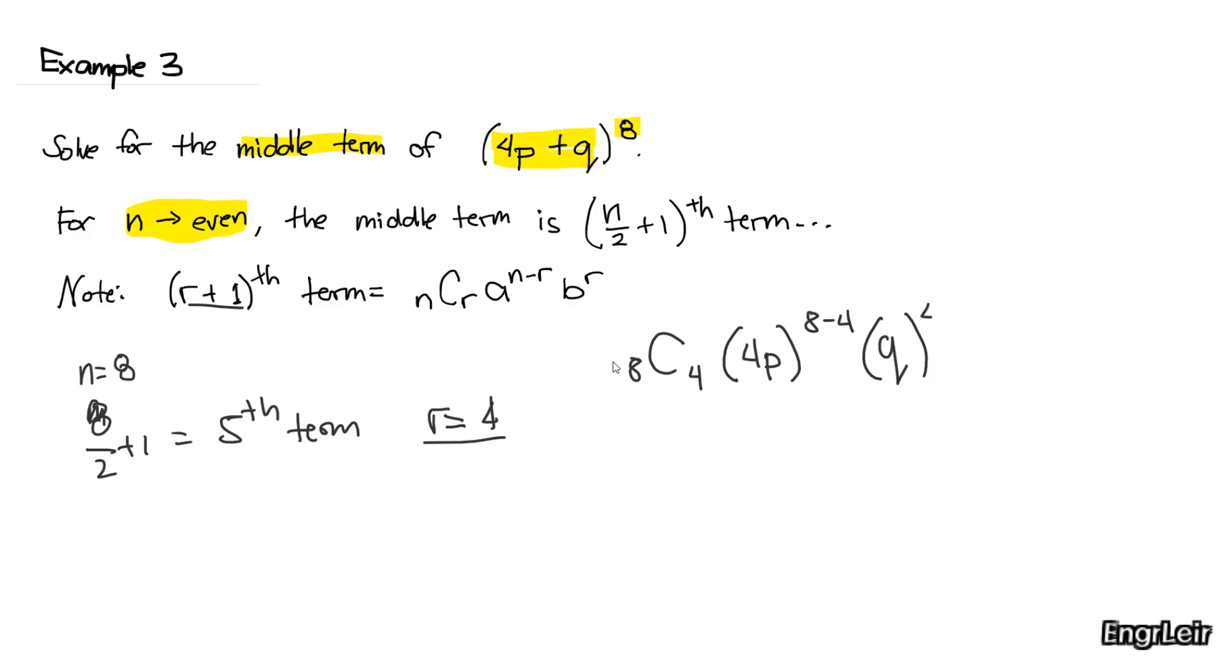And solving 8 combination 4 using our calculator, we find that equals 70. And 4P raised to 4, so 4 raised to 4.